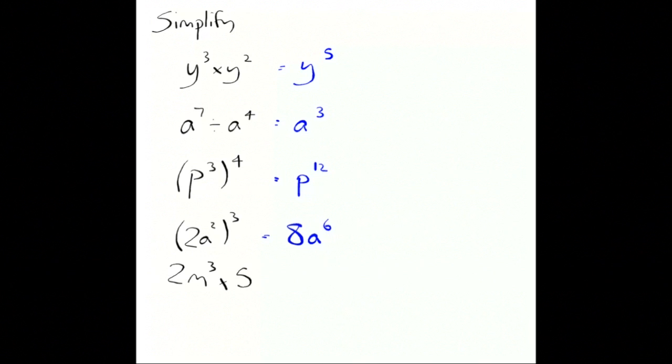If we've got 2m cubed times 5m squared, we times our two numbers together, and our two m's end up adding the powers.